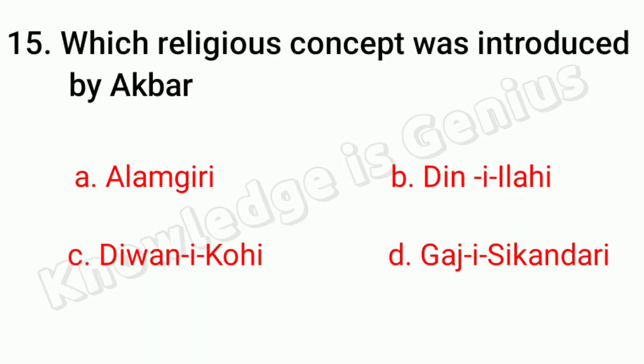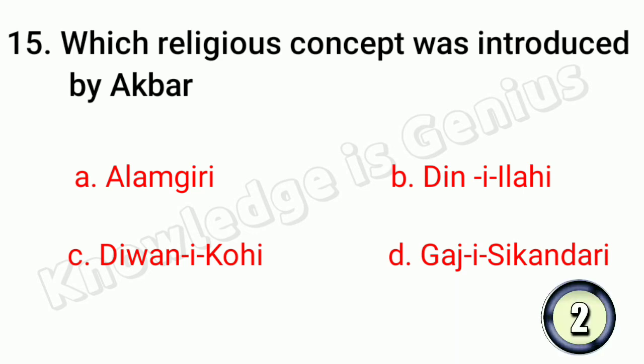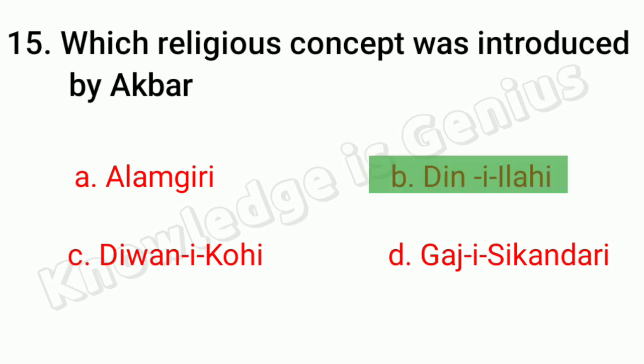Which religious concept was introduced by Akbar? A. Alamgiri. B. Din-e-Ilahi. C. Diwani Kohi. D. Gaj-e-Sikandari. Answer is B. Din-e-Ilahi.